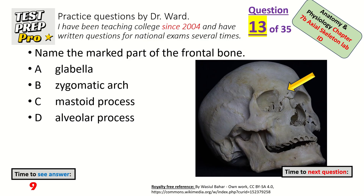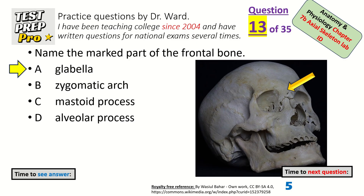Name the marked part of the frontal bone — it's pointing to a spot between the eyes at the lower part of the frontal bone. Glabella.